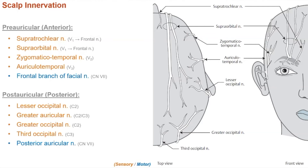Posterior to the ear, we have the lesser occipital, greater auricular, greater occipital, and third occipital nerves — all sensory — and the posterior auricular nerve, which is motor.